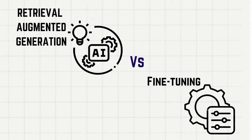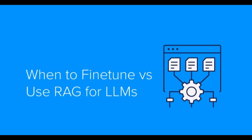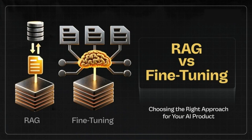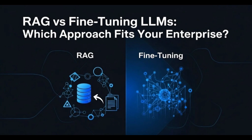You've got an LLM. It's smart, but it's not smart enough for your problem. So you've got two choices: fine-tuning or RAG. Pick the wrong one and you could waste thousands of dollars, months of engineering time, and still get mediocre results. Pick the right one and you build something that actually works. Today, we're breaking down exactly when to use each and why the answer isn't what most people think.